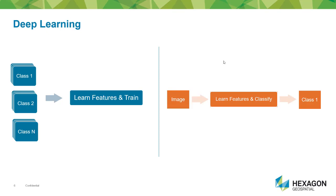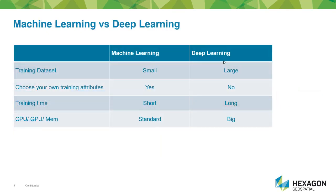That's one of the most important differentiators between machine learning and deep learning. There are some further differences that arise mainly from this. First, a very large training dataset is needed for deep learning algorithms, partly because the algorithm has to analyze the data and select attributes for training — machine learning algorithms do not need such large training data. Also, because deep learning algorithms are trained on very large datasets, it takes a considerable amount of time to train them. Lastly, you need a high-performance machine with adequate memory and processing power to train deep learning algorithms.